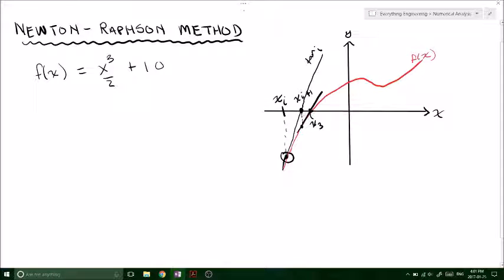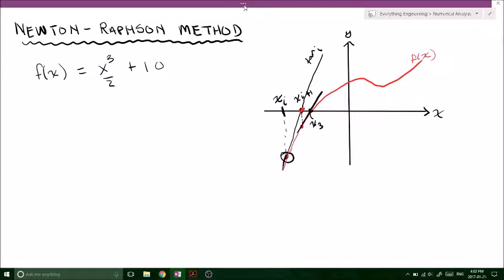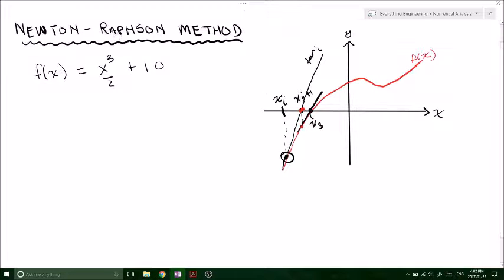That's kind of the way this method works. So we have an initial guess x i. We find the function value at that point x i. Draw our tangent line to the curve and where that tangent line intersects our x-axis, we plug that into our function again and we have a new tangent line to our curve and we keep repeating that until our error, our approximated error, is low enough such that it will be in an acceptable range.